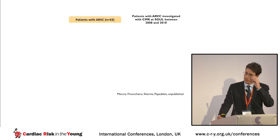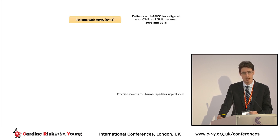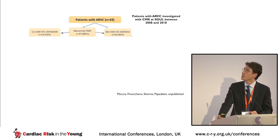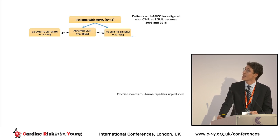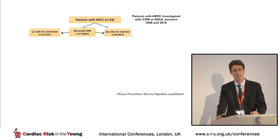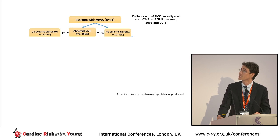I want to share our experience at St George's Hospital where we studied 43 patients with arrhythmogenic right ventricular cardiomyopathy fulfilling Task Force Criteria, all investigated with cardiac MRI. Most of them — 86% — had an abnormal cardiac MRI. However, importantly, 20 patients (46%) did not fulfill the cardiac MRI Task Force Criteria for dilatation and dysfunction in combination with dyskinesia or akinesia.